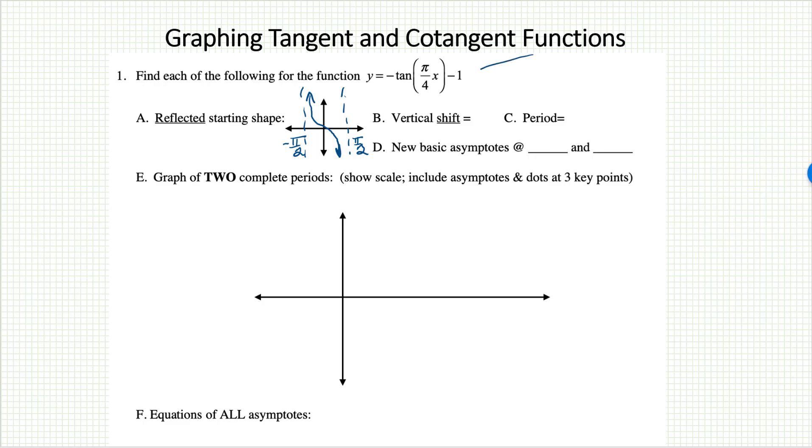Vertical shift? Well, that's the minus 1 at the end. This entire picture will be shifted down one unit. How about period? Do we have a change there? Absolutely, because we have a b number, a multiplying number by the x.